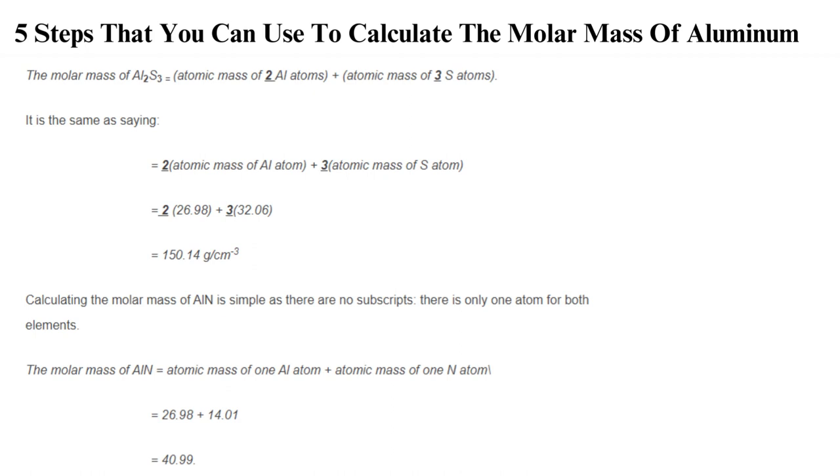For instance, the molar mass of aluminum sulfide equals atomic mass of two aluminum atoms plus atomic mass of three sulfur atoms. It is the same as saying equals 2 times atomic mass of aluminum atom plus 3 times atomic mass of sulfur atom, equals 2 times 26.98 plus 3 times 32.06 equals 150.14 grams per centimeter cubic.